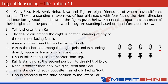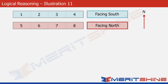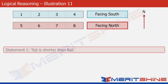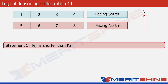So let's solve this problem now. The first step would be to make a structure like this. You can see here that we have made two blocks — one for girls who are facing south, and one for girls who are facing north. North is taken as the upward direction. The girls who will occupy positions five, six, seven, and eight would face north, and the girls who occupy positions one, two, three, and four would be facing south. We will break this problem up into three parts. In the first part, we will try and figure out the order of their heights. Statement one says that Teji is shorter than Kali, so T is less than K — meaning the height of Teji is less than that of Kali.